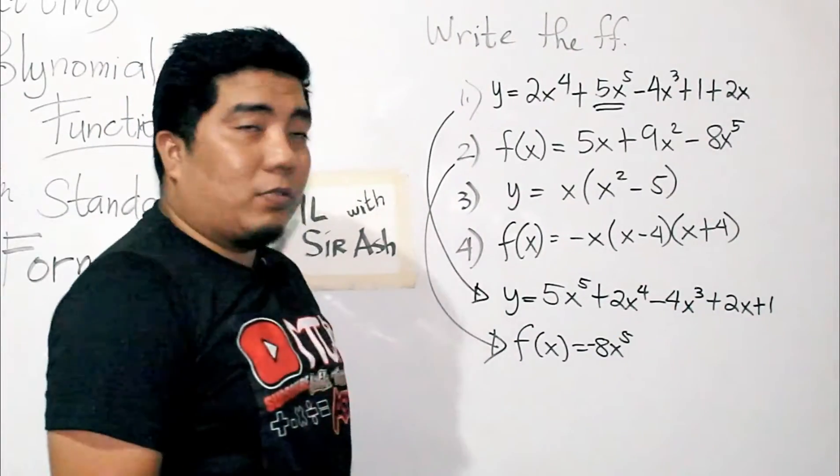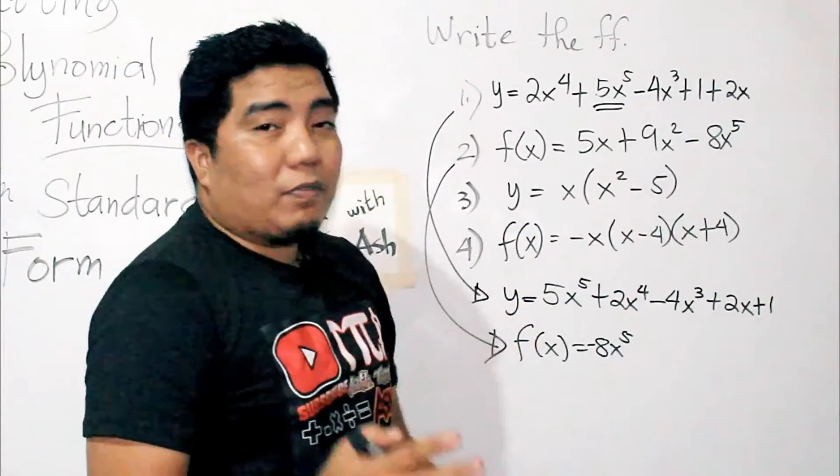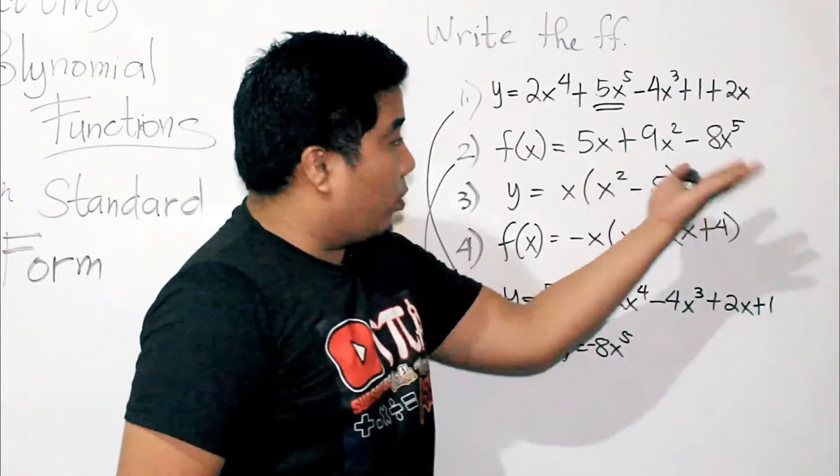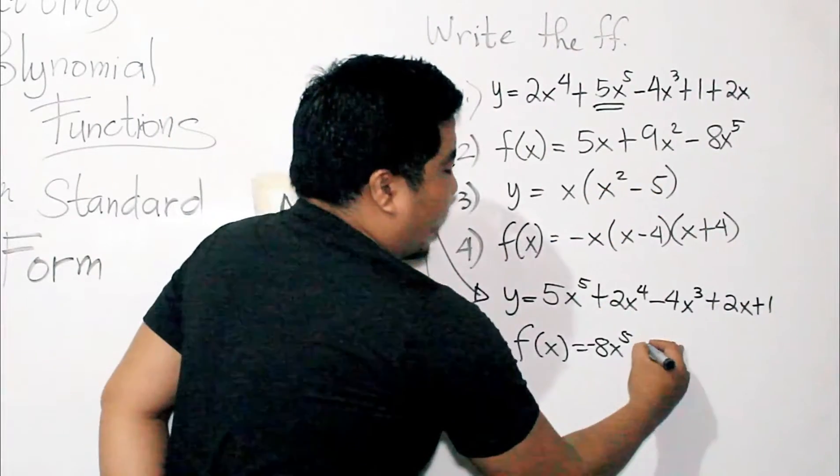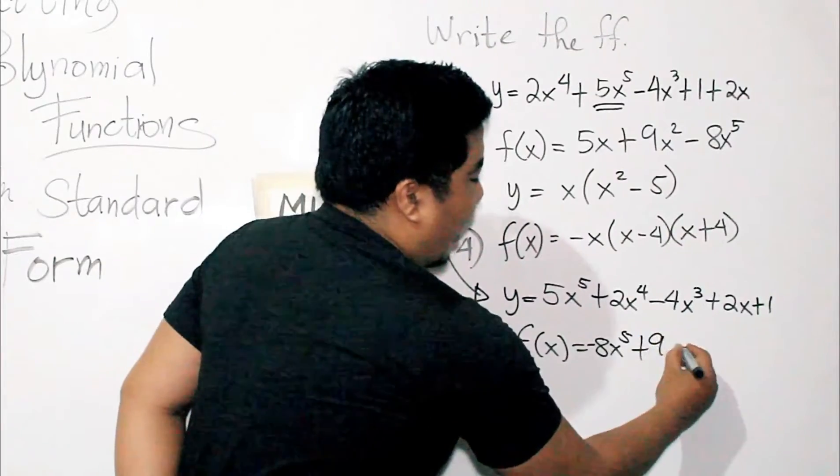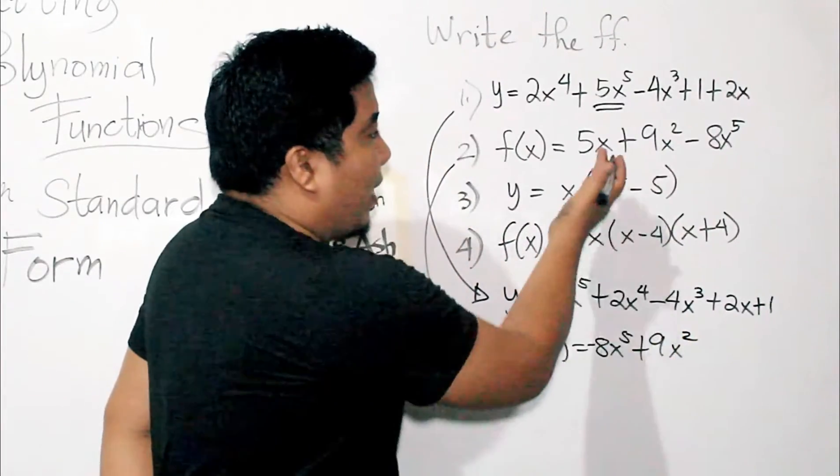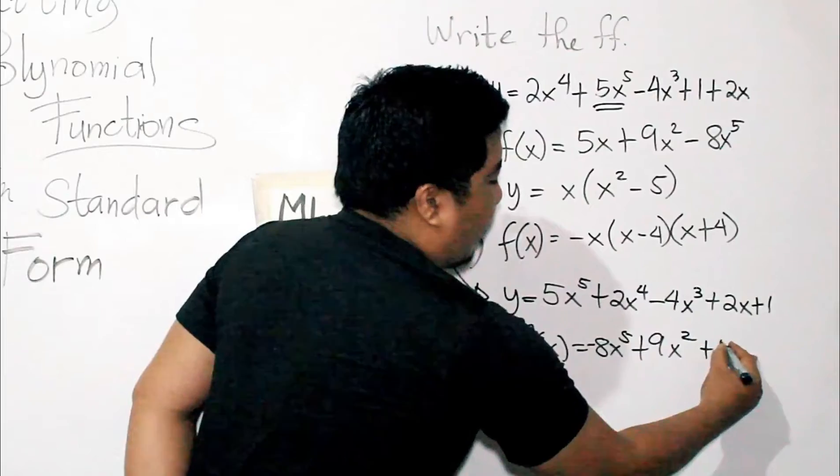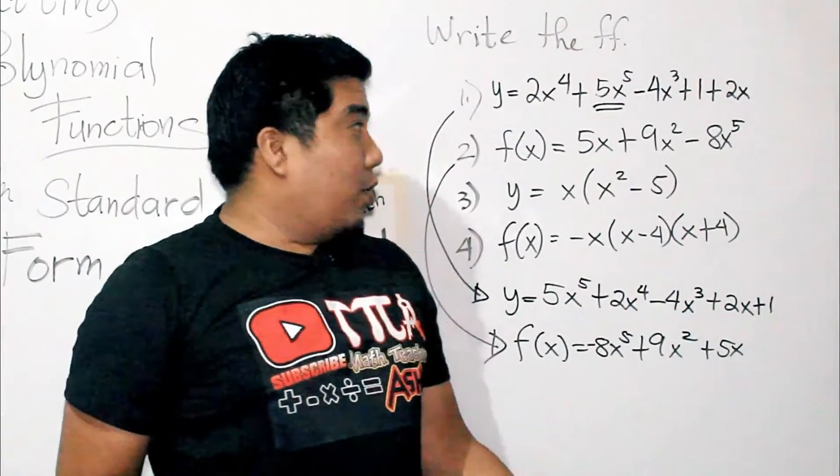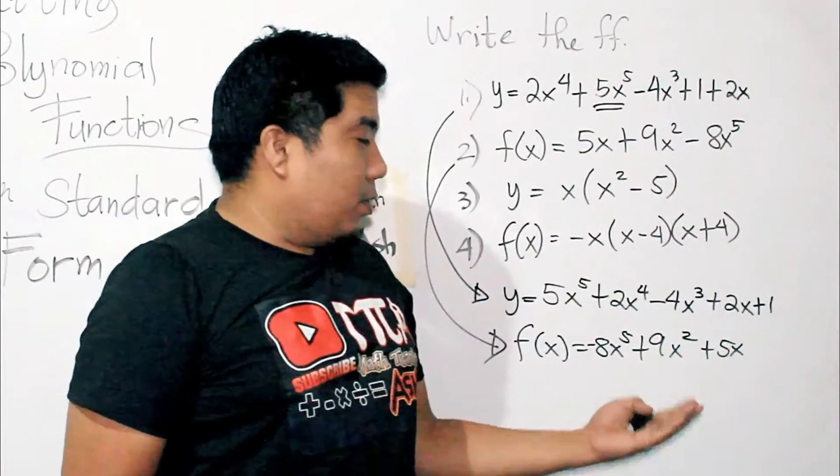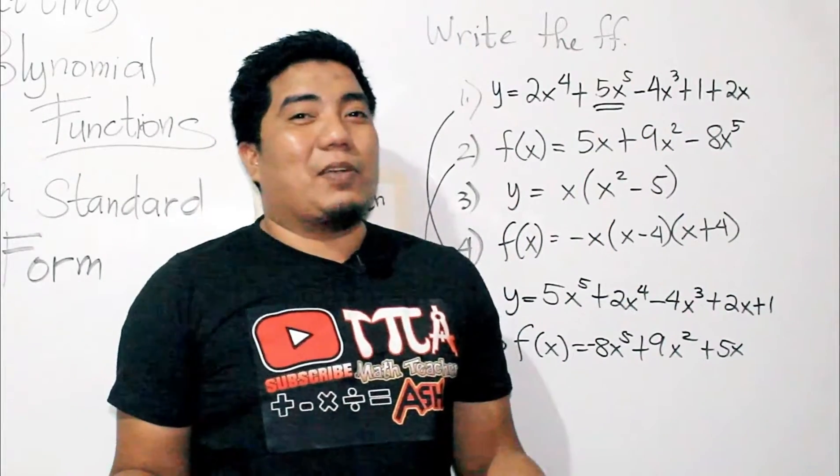And then followed by to the power of 4. We don't have to the power of 4. To the power of 3. We don't have to the power of 3. Next is to the power of 2. We have 9x squared. And that is positive. So, 9x squared. And then finally, we have positive 5x. So, this is how you write your second example to standard form. Easy, right?